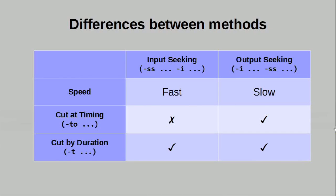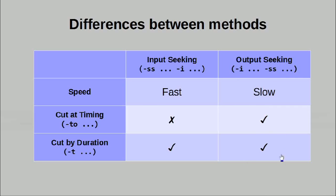As a very quick summary: using input seeking is fast, but we're restricted to only cutting by duration. Using output seeking is slower, but we actually have a choice whether we want to cut at a particular timestamp or cut by duration, which is still accessible.